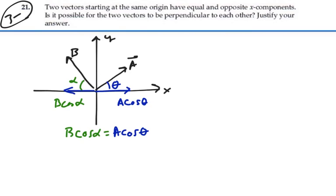You know, if b is long enough, we can make this happen. So regardless of theta and alpha, and the fact that this is perpendicular here, we can alter the length of b to make this possible, so that b cosine alpha is equal to a cosine theta.